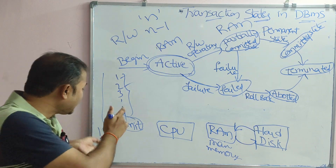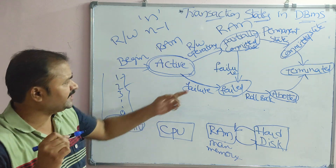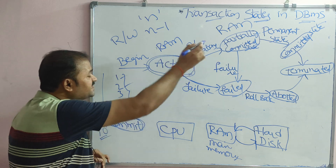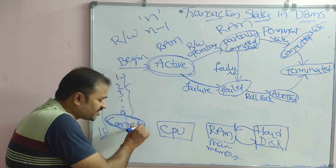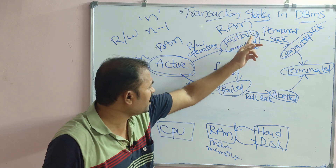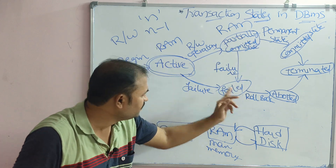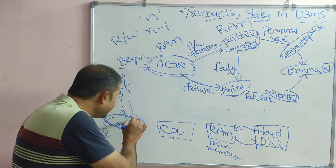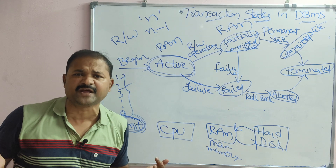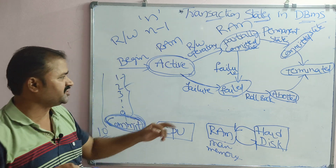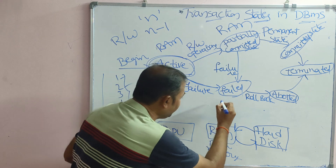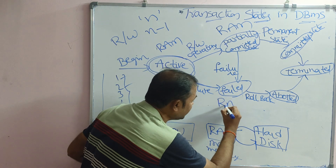If the commit instruction executes successfully, the transaction goes into the committed state. However, if there is a problem in that last instruction — either a hardware problem or a software problem — then the transaction goes to the failed state. So from the partially committed state, we can go to either the committed state or the failed state. In the failed state, the transaction is still in RAM.